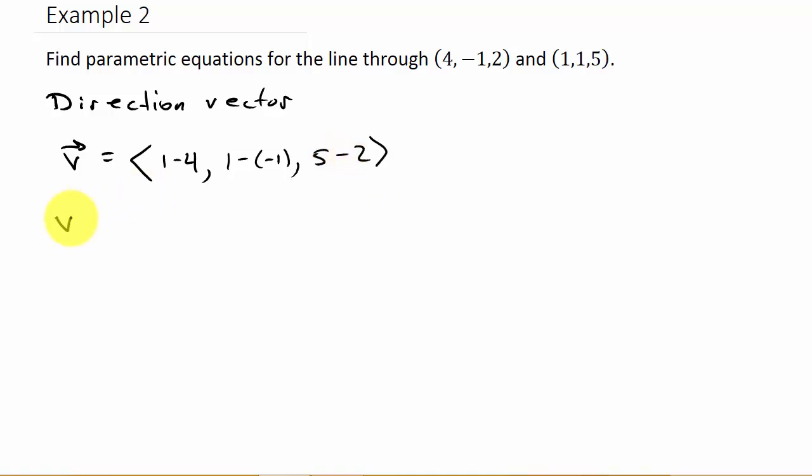And so we're going to get our direction vector is ⟨-3, 2, 3⟩. So there's our direction vector that our line is parallel to.